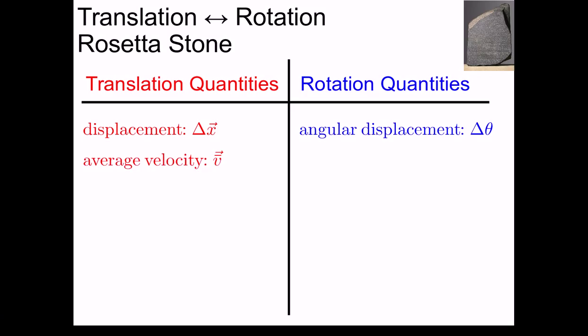On the translation side, we have the average velocity, v bar, which is defined as delta x over delta t. Whereas on the rotation side, we have the average angular velocity, omega bar, which is defined as delta theta over delta t. So, in both cases, it's displacement over time. On the translation side, you're looking at the translational displacement, delta x. While on the rotation side, you're looking at the angular displacement, delta theta.